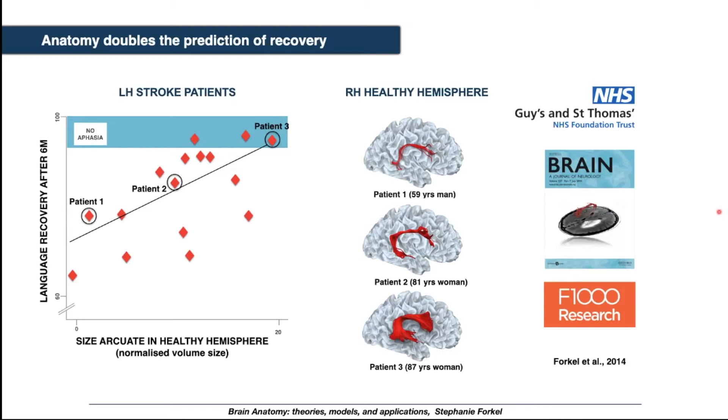What we were able to show here is that controlling for all these factors, we can actually double the prediction by adding in the variability of the arcuate fasciculus in the right healthy hemisphere. This was super exciting and the first study to show that.